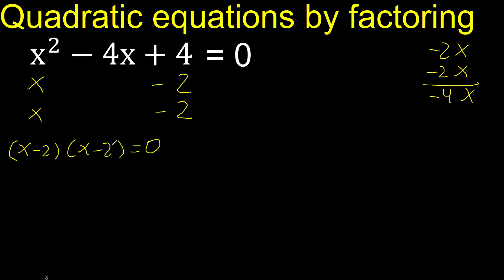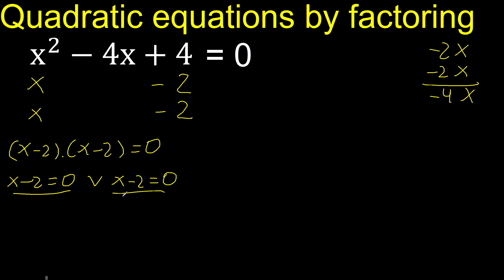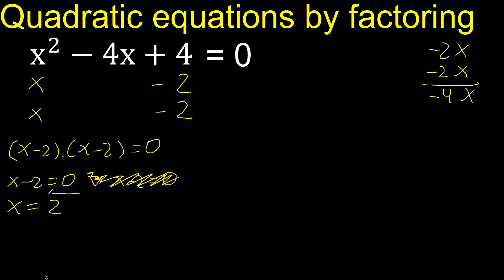Equal to 0 by zero product rule, therefore this factor equals 0 or this factor equals 0. We eliminate, giving minus 2, then change the sign: x equals 2 or x equals plus 2. Finished.